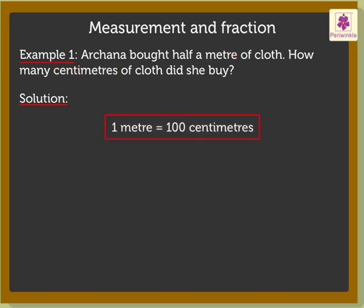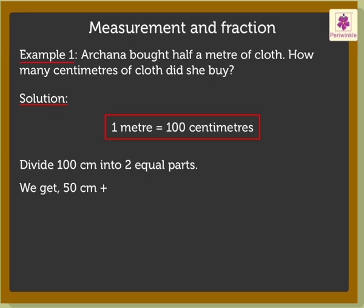We know that 1 meter is equal to 100 centimeters. If we divide 100 centimeters into two equal parts, we get 50 centimeters plus 50 centimeters is equal to 100 centimeters.